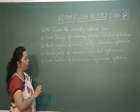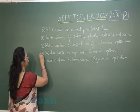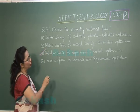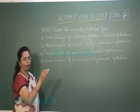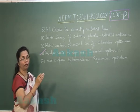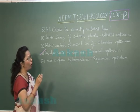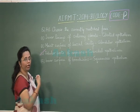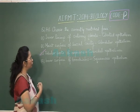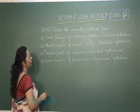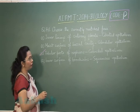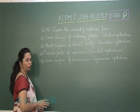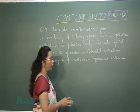Tubular parts of nephron lined by cuboidal epithelium — this is correct. Inner surface of bronchioles: there are a number of levels where it goes from columnar to cuboidal, and in the end part it reaches squamous. So our best answer is tubular parts of nephron having cuboidal epithelium. Now we can move on to question 142.